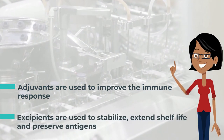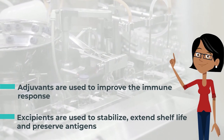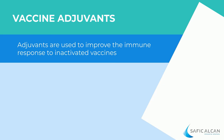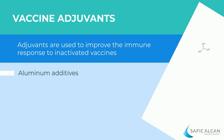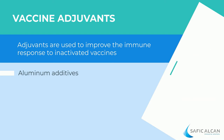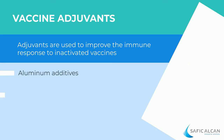Let's see some adjuvant examples, starting with aluminum additives. They are the most commonly used adjuvant in vaccines and have been for more than 80 years. Aluminum salts such as aluminum hydroxide and aluminum hydroxyl phosphate ensure slow release and better absorption of the vaccine by the immune system.